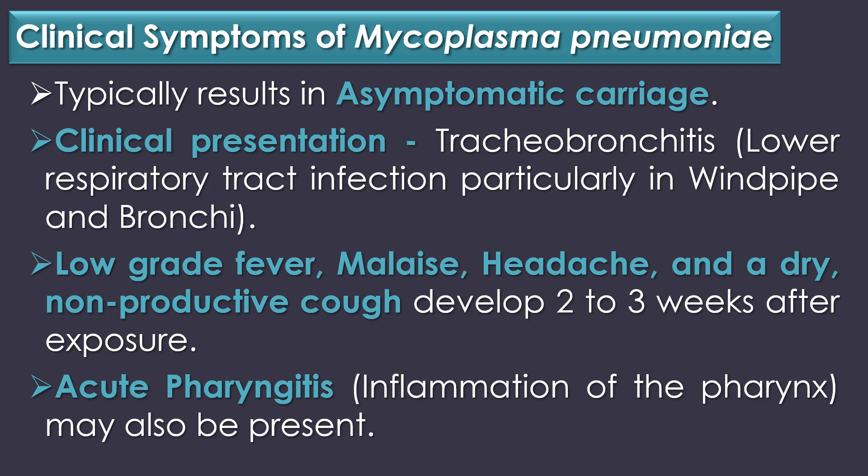Clinical symptoms: Exposure to Mycoplasma pneumoniae typically results in asymptomatic carriage. The most common clinical presentation is tracheobronchitis, i.e., lower respiratory tract infection, particularly in the windpipe and bronchi. Low-grade fever, malaise, headache, and a dry non-productive cough develop 2 to 3 weeks after exposure. Acute pharyngitis, or inflammation of the pharynx, may also be present. Symptoms gradually worsen over the next few days and can persist for 2 weeks or longer.